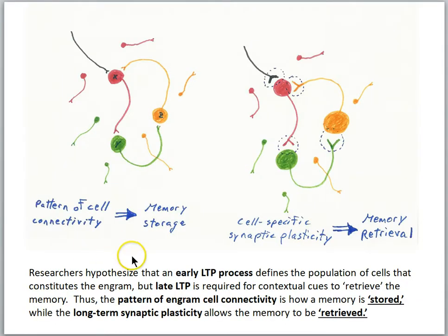This led researchers to suggest the following. They hypothesized that an early LTP process defines the population of cells that constitutes the engram, but late LTP is required for contextual cues to retrieve the memory.